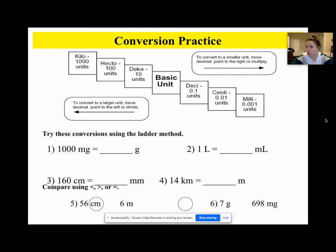So hopefully you got that number one was equal to one gram, number two was equal to 1000 milliliters, number three was equal to 1600 millimeters, and number four was equal to 1400 meters. For number five, I changed both numbers to centimeters so I could easily compare them. So 56 centimeters compared to 600 centimeters, so I got 56 centimeters is less than 6 meters. And then number six, I changed them both to milligrams. So I got seven grams is greater than 698 milligrams. And so I had changed it to 7000 milligrams, just so I could see.